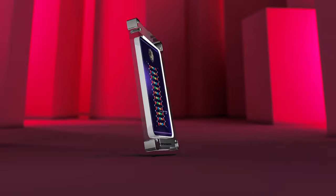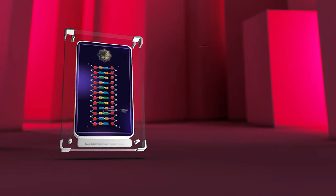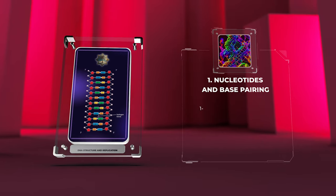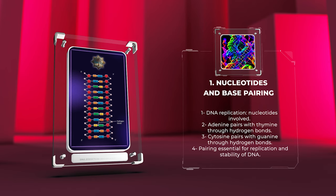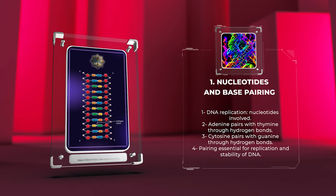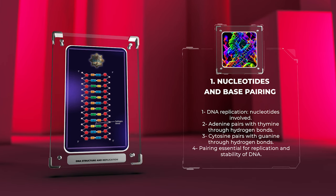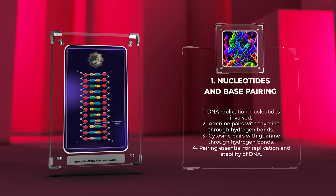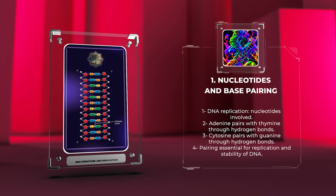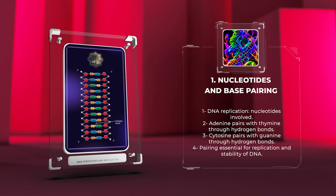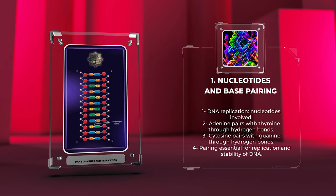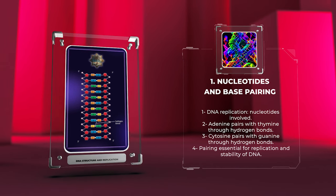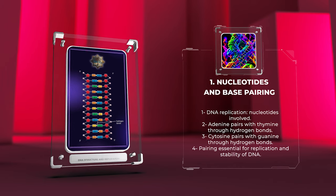In the process of DNA replication, nucleotides — composed of a sugar molecule, a phosphate group, and a nitrogenous base — are involved. Adenine pairs with thymine through two hydrogen bonds, while cytosine pairs with guanine through three hydrogen bonds. This pairing is essential for accurate replication and stability of DNA.